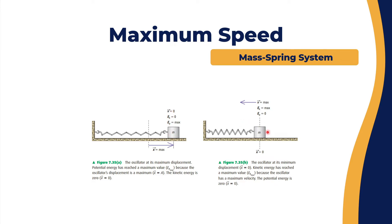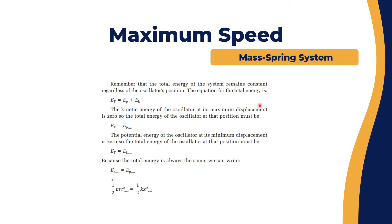At the minimum displacement, which is x equals zero, the potential energy is zero but the kinetic energy will be at max and the velocity will be at max. We need to remember that the total energy of the system is constant regardless of the oscillator's position.